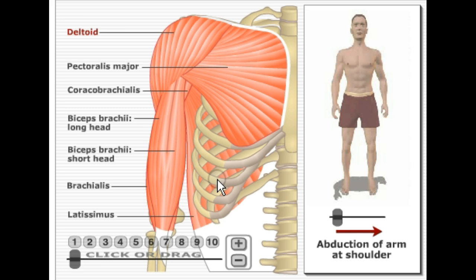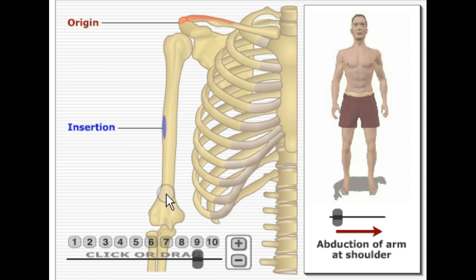Let's get started. First, I'm going to start with muscles of the upper extremities. Here we're looking at the shoulder, and the deltoid muscle is the first one I'm going to talk about. It originates on the acromial end of the clavicle, the acromial process of the scapula, and the spine of the scapula. It inserts down here on the humerus at the deltoid tuberosity.